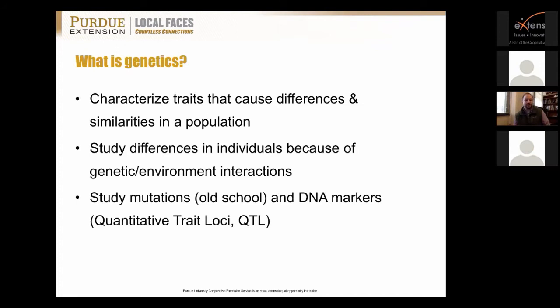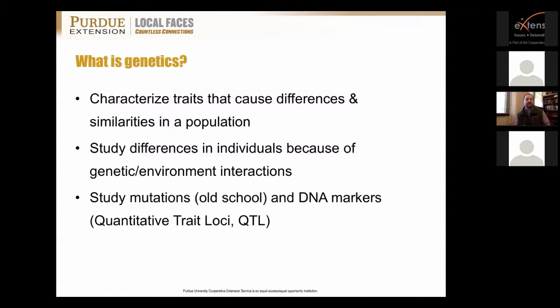Traditionally, genetics was based more in the study of mutations — we would look for birds that did not look anything like the parents and try to figure out exactly what changed in the genetic makeup. An example would be the commercial turkey: the wild or bronze turkey had a feather mutation that resulted in a white bird being produced, and we selected birds with this mutation to produce a white bird.